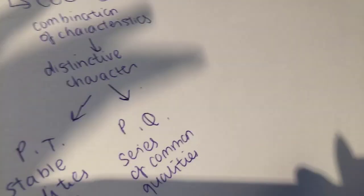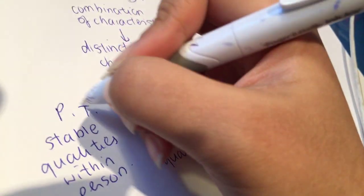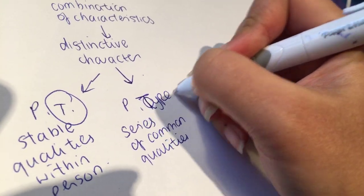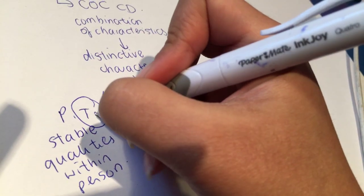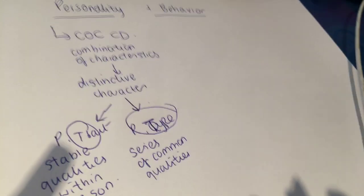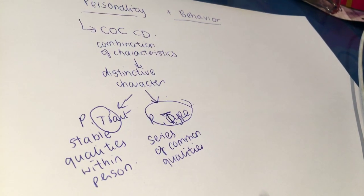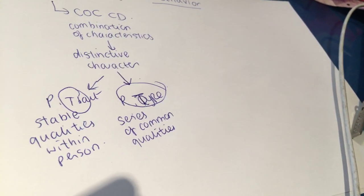And qualities are a series of common qualities. Personality qualities - is it personality qualities or personality type? Okay, that's personality type. So you have to be aware of the difference between personality trait and personality type. Personality traits are stable qualities within a person. Personality types are a series of common qualities or common traits that people have in common.